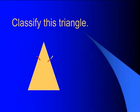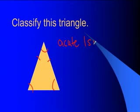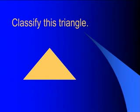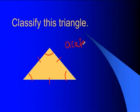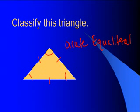This triangle has two sides that look the same, and all of its tiny angles are less than 90, so they are acute — giving us an acute isosceles triangle. In this triangle, all three sides look the same and all of the angles are less than 90, so our angles are acute and all sides are equal, making it an acute equilateral triangle.